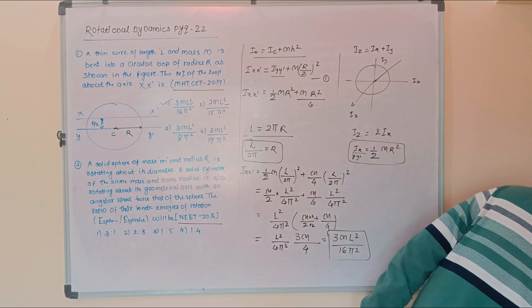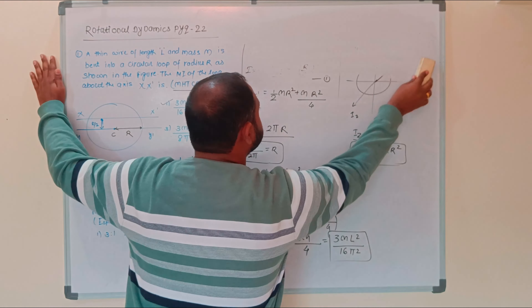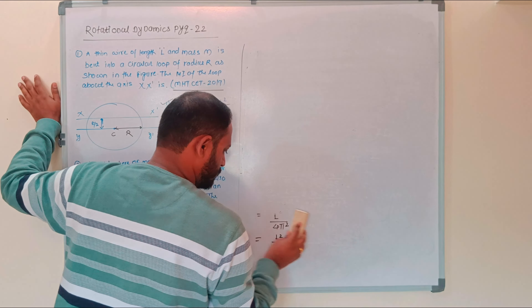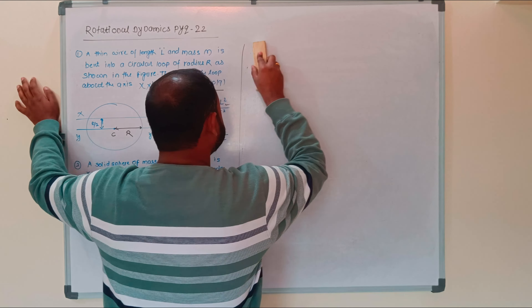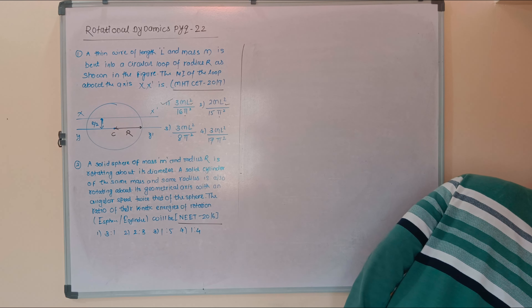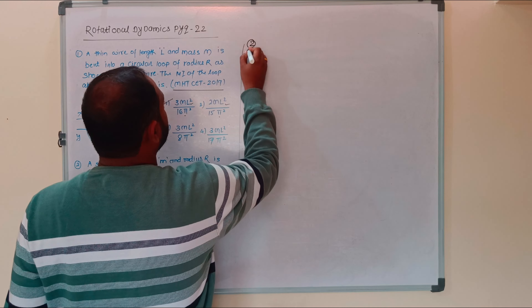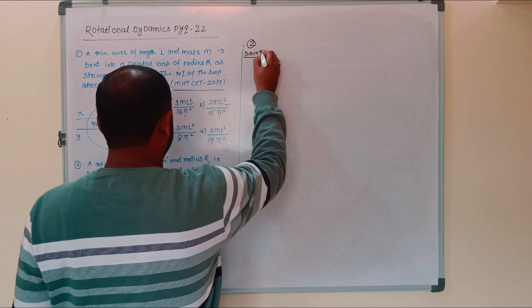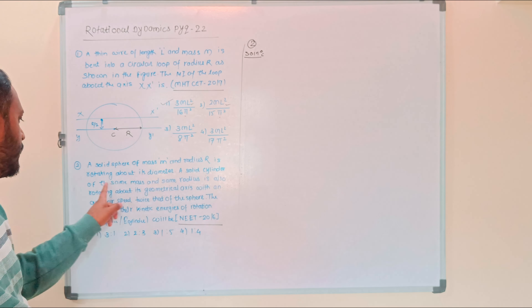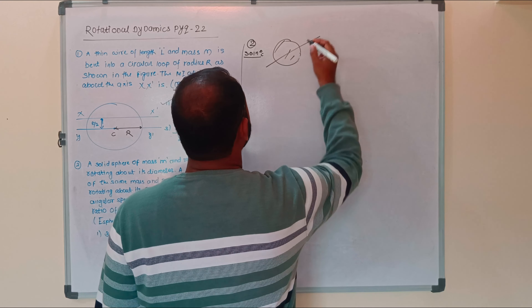Now we move to the next question. The second question is from NEET 2016. A solid sphere of mass M and radius R is rotating about its diameter.